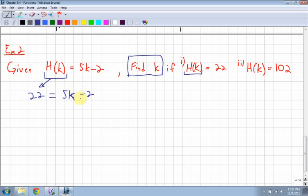So now it's just algebra. Add 2, add 2. So I get 24 equals 5k. Divide by 5, divide by 5. So k is equal to 24 over 5. You could convert that to a decimal if you wanted to. Okay. That's part 1.